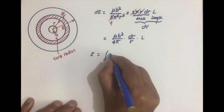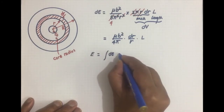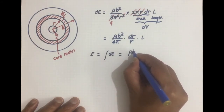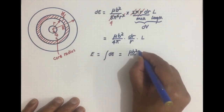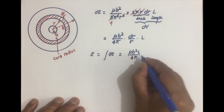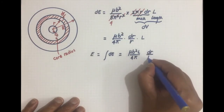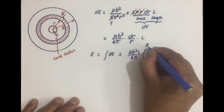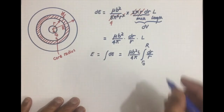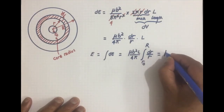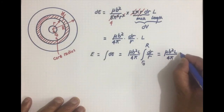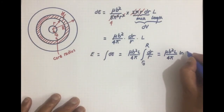The total elastic energy E is the integral of dE = (μB²L / 4π) · (dR / R), integrated from the core radius r₀ to the crystal radius R. This is a simple integral, and it evaluates to E = (μB²L / 4π) · ln(R / r₀).